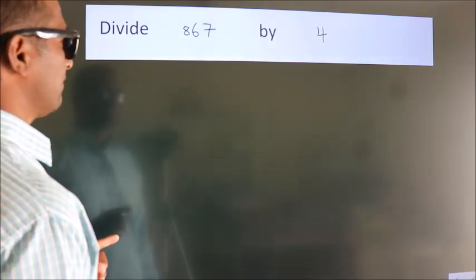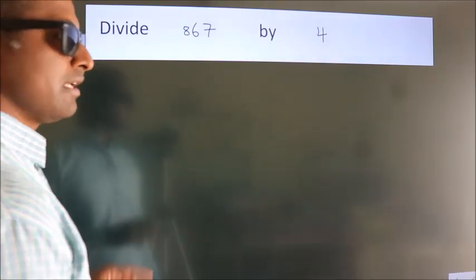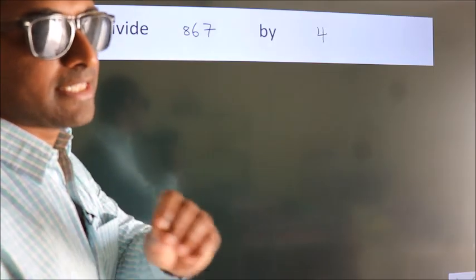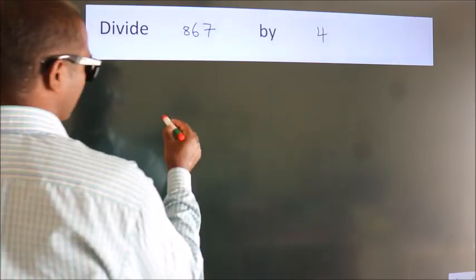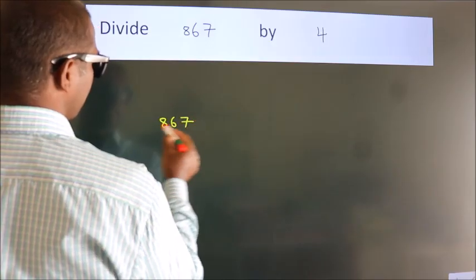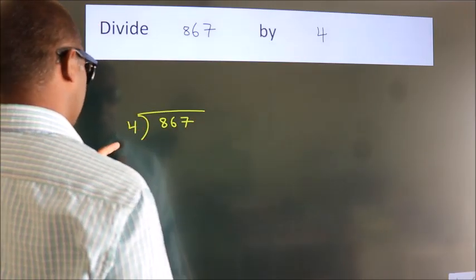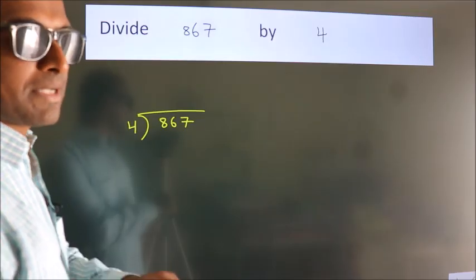Divide 867 by 4. To do this division, we should frame it in this way: 867 here, 4 here. This is your step 1.